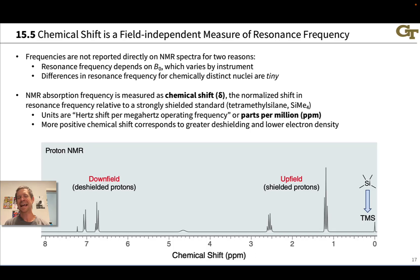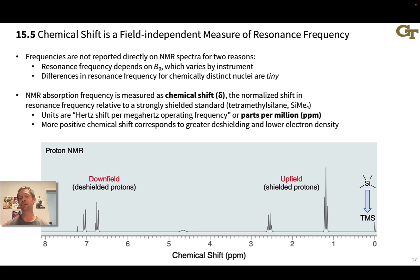So far we've talked about the x-axis of an NMR spectrum as frequency — the precession frequency of the hydrogen atom in a proton NMR spectrum. But frequencies are not reported directly on NMR spectra because of dependencies we've already seen. The resonance frequency depends on the magnetic field strength of the instrument, so along with every reported frequency we'd need the operating frequency or the magnetic field strength of the instrument as well.